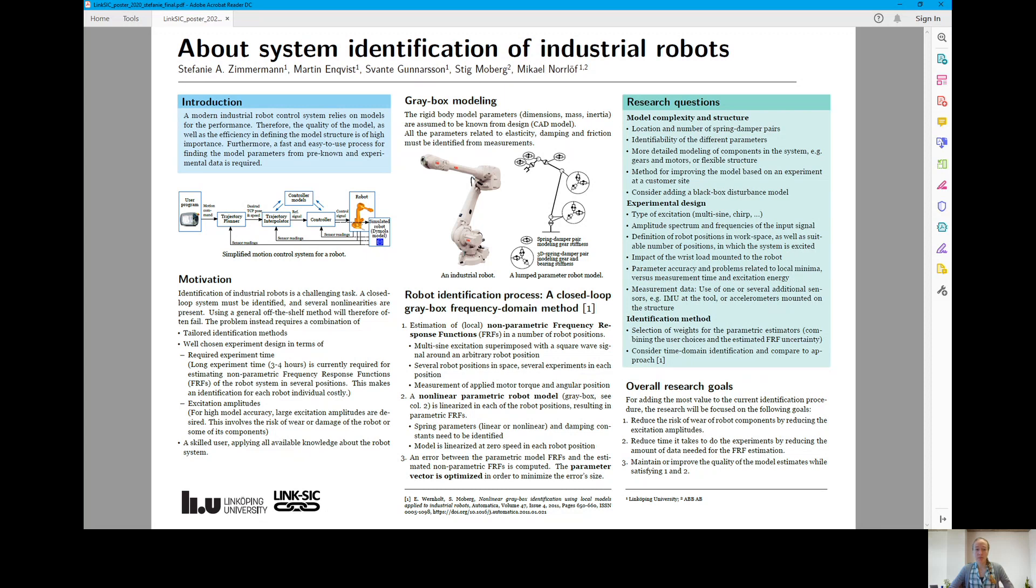Currently long experiment times of 3 to 4 hours are required for estimating the non-parametric frequency response functions of the robot systems in several positions. And this makes an identification for each robot individual costly and one might identify only one model for one whole robot series, for example.